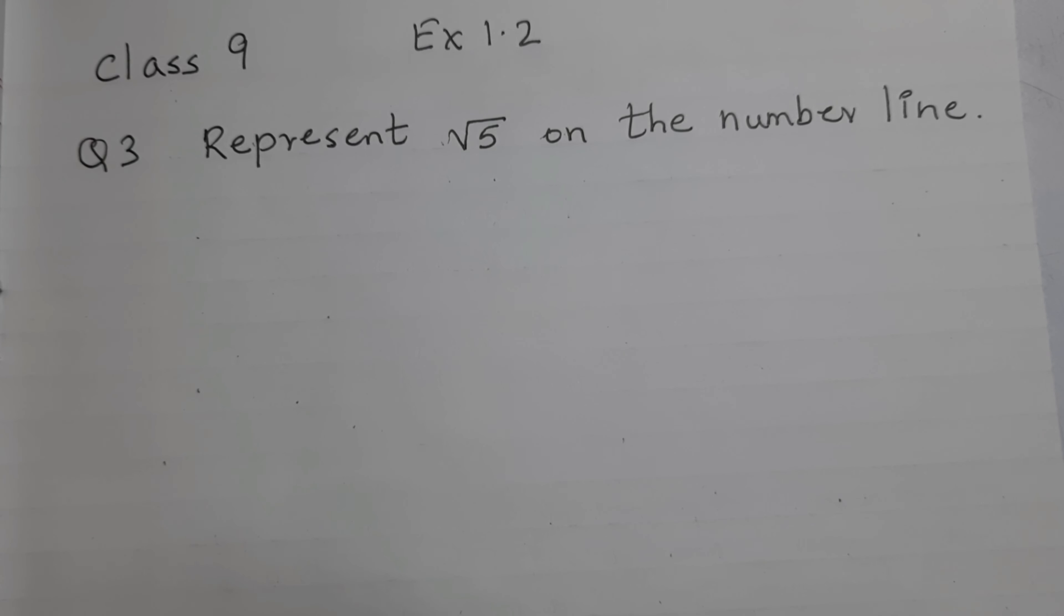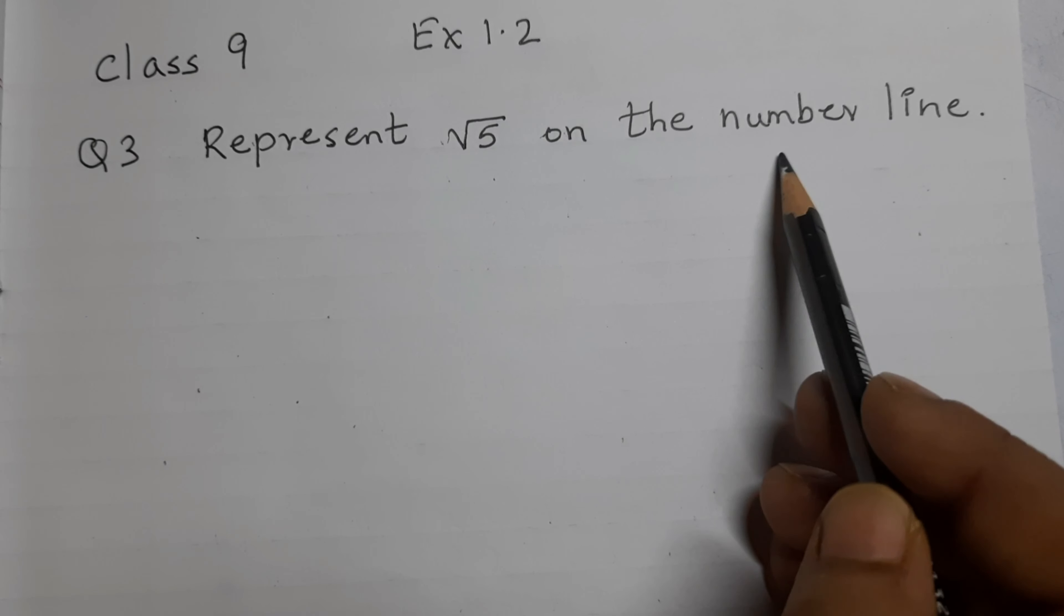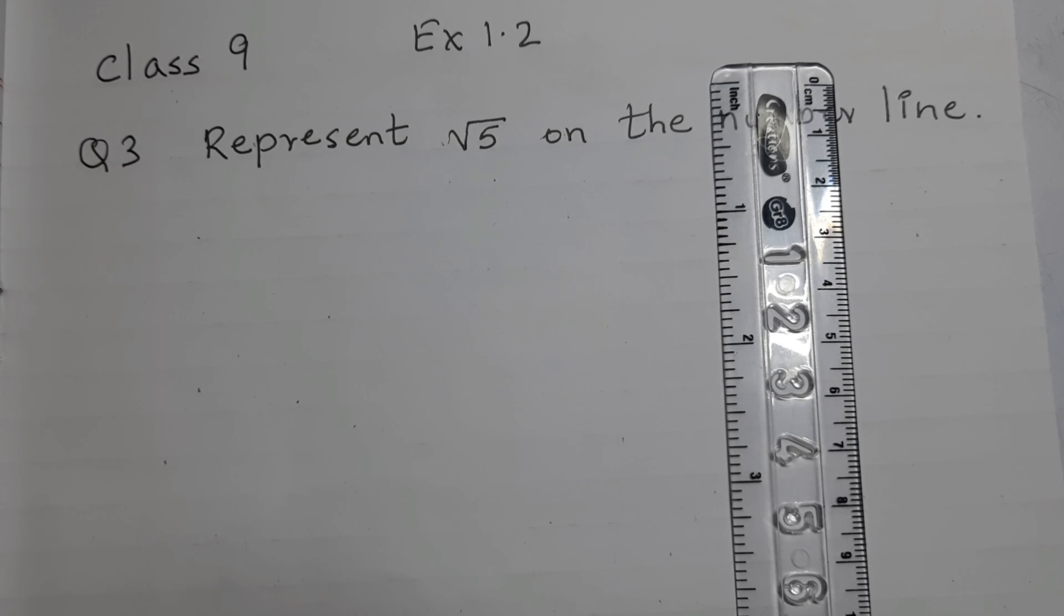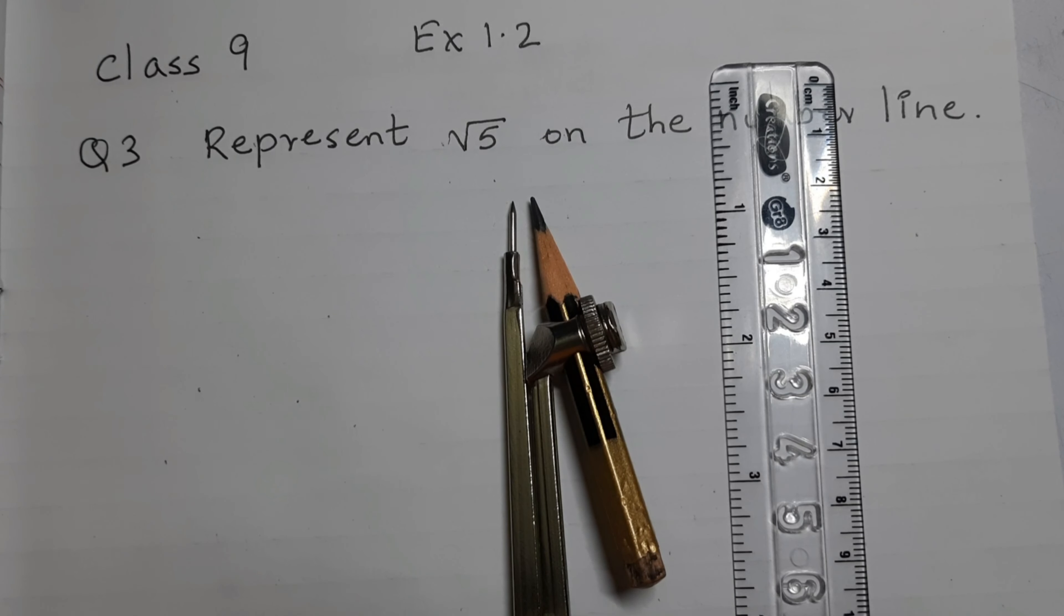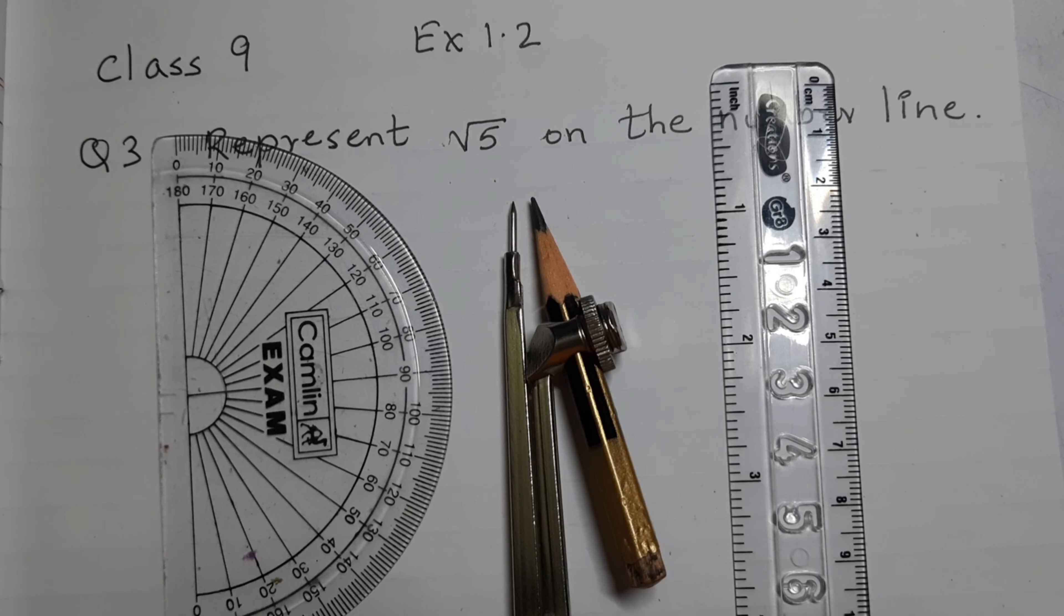Hello everyone, today we will learn how to represent square root of 5 on the number line. In the previous video, we located square root of 2 and square root of 3 on the number line. Same way, using a ruler, a compass and a protractor, we are going to locate square root of 5 on the number line. So let's get started.